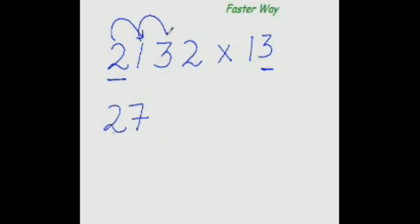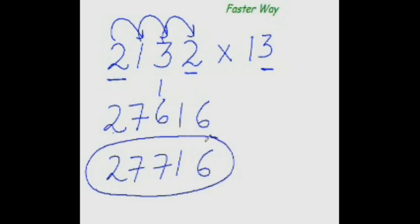Now 1 three times is 3, and 3 plus 3 is 6. And 3 three times is 9, and 9 plus 2 is 11. So put 1 here and 1 here. And 2 three times is 6. So the answer would be 27,716. This is what the answer is.